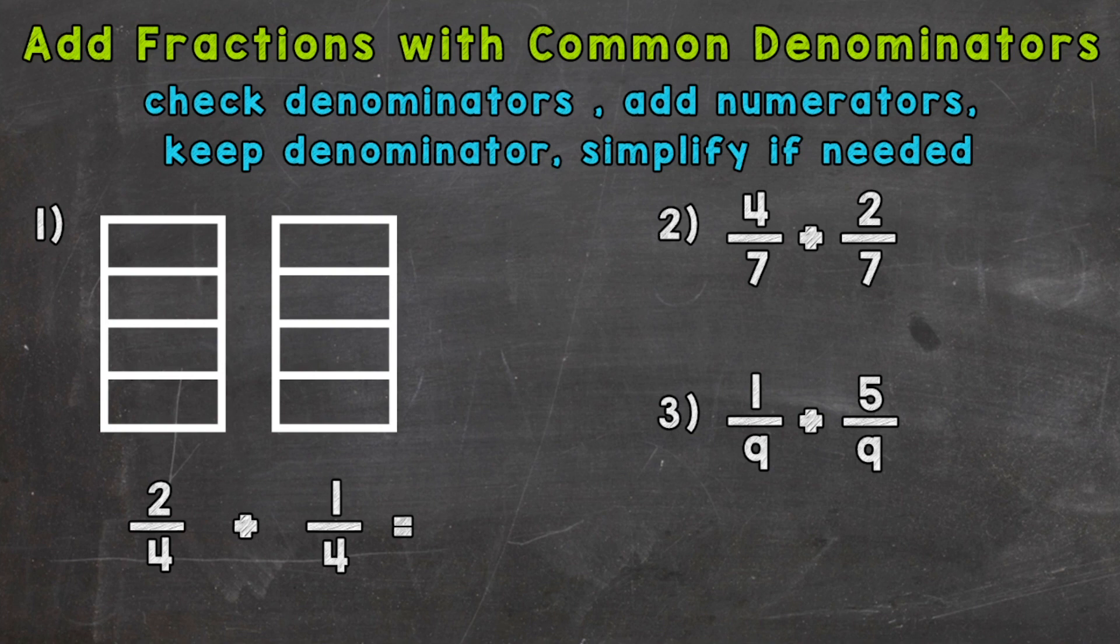At the top of your screen in blue we have the steps we're going to take in order to do this. We're going to check our denominators and I'll tell you why here in a second. We're going to add our numerators, keep our denominator the same, and then simplify if needed. And we're going to go through three examples in order to get this down.